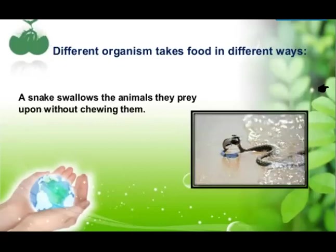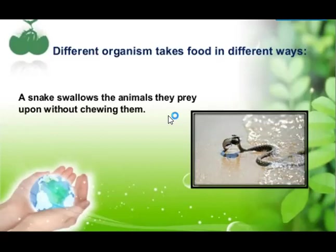A snake swallows the animal it preys upon without chewing. The whole animal is swallowed by the snake. The animal on which the hunting animal depends for its food is called its prey. Snakes swallow the full animal as a whole, and digestion of the prey happens inside their body. So, snakes swallow animals without chewing them.